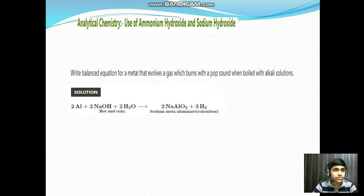Chapter: Analytical Chemistry, Use of Ammonium Hydroxide and Sodium Hydroxide. Write a balanced equation for a metal that evolves a gas which burns with a pop sound when boiled with alkali solutions. Solution: Aluminium plus Sodium Hydroxide plus water gives rise to Sodium Meta-aluminate plus Hydrogen. The gas which burns with a pop sound is Hydrogen.